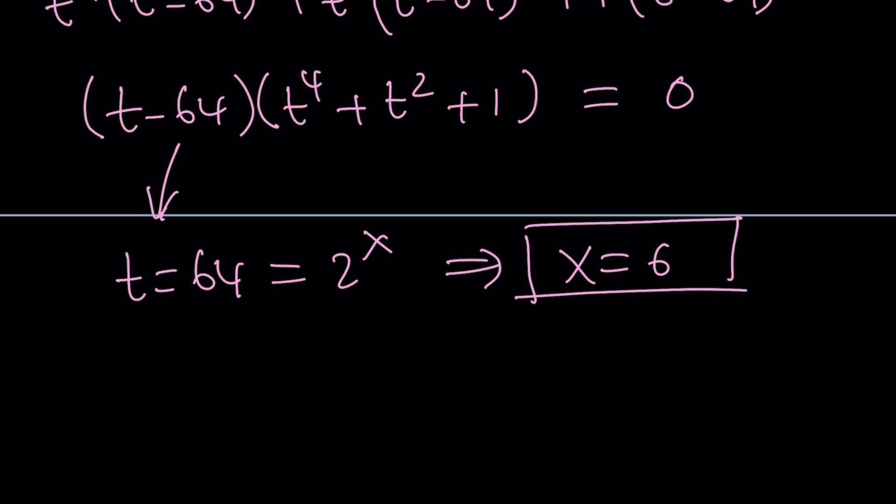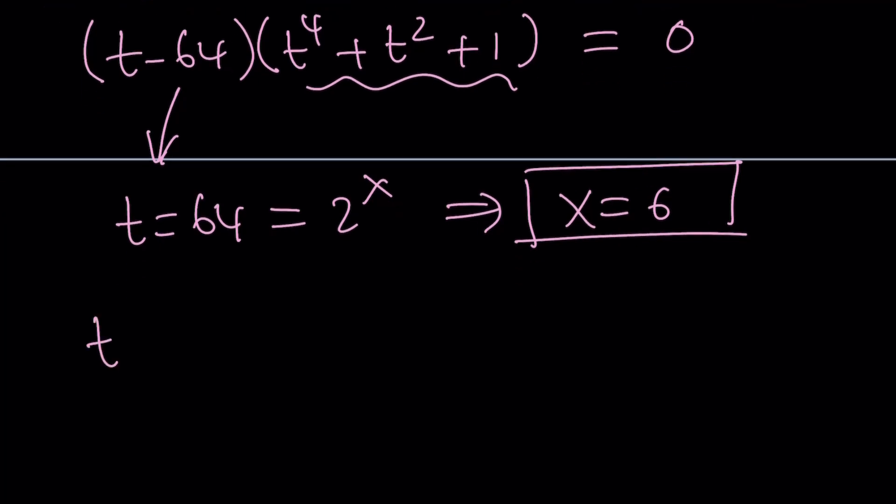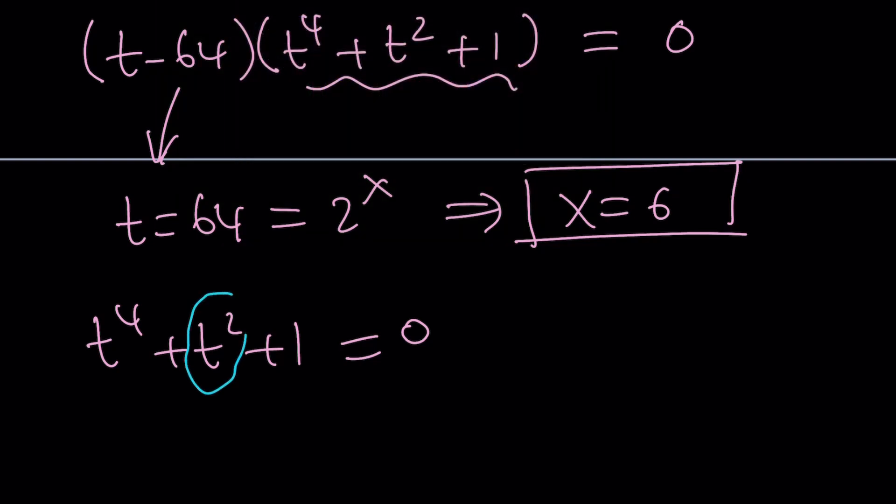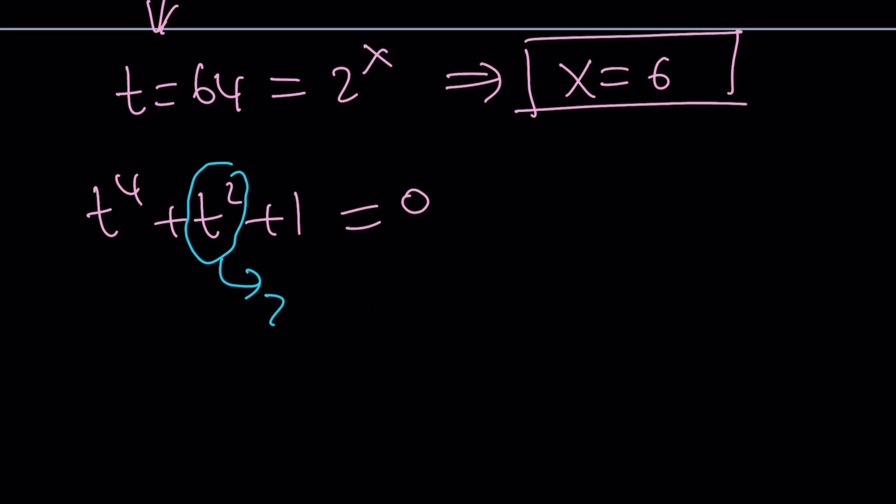Let's take a look at the other factor. That other factor is quartic, but notice that it can be turned into a quadratic. In other words, it is bi-quadratic. If you use substitution one more time, which is what I love to use, let's call t squared something. How about z? Because z is a fun variable. That gives us z squared plus z plus 1 equals 0. By the way, z is not reserved for complex numbers. A lot of times it's used for complex numbers, but it doesn't have to be that way.